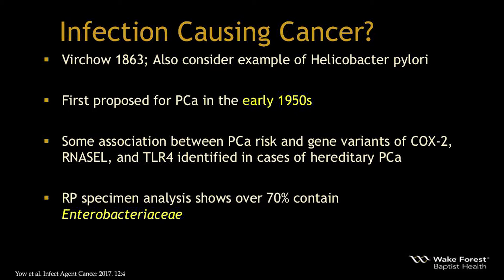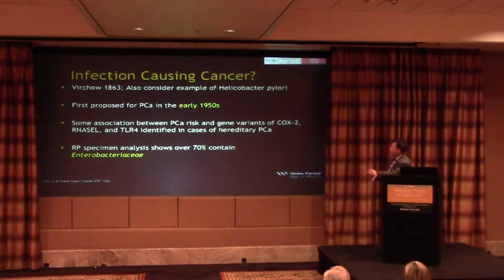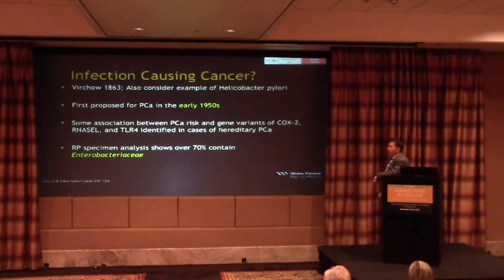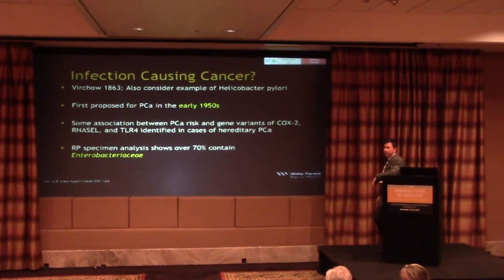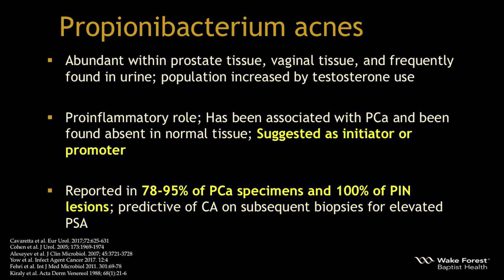The concept of infection resulting in cancer is not new — recall Virchow's work in the 1800s, and the well-known example of H. pylori in gastric disease. This relationship was first proposed for prostate cancer back in the early 1950s. Associations between prostate cancer risk and gene variants of COX-2, RNase L, and Toll-like receptor 4 have been identified in hereditary prostate cancer. COX-2 relates to inflammation; RNase L provides protection against viral disorders through the interferon pathway; and Toll-like receptor 4 recognizes lipopolysaccharides of gram-positive and gram-negative bacteria.